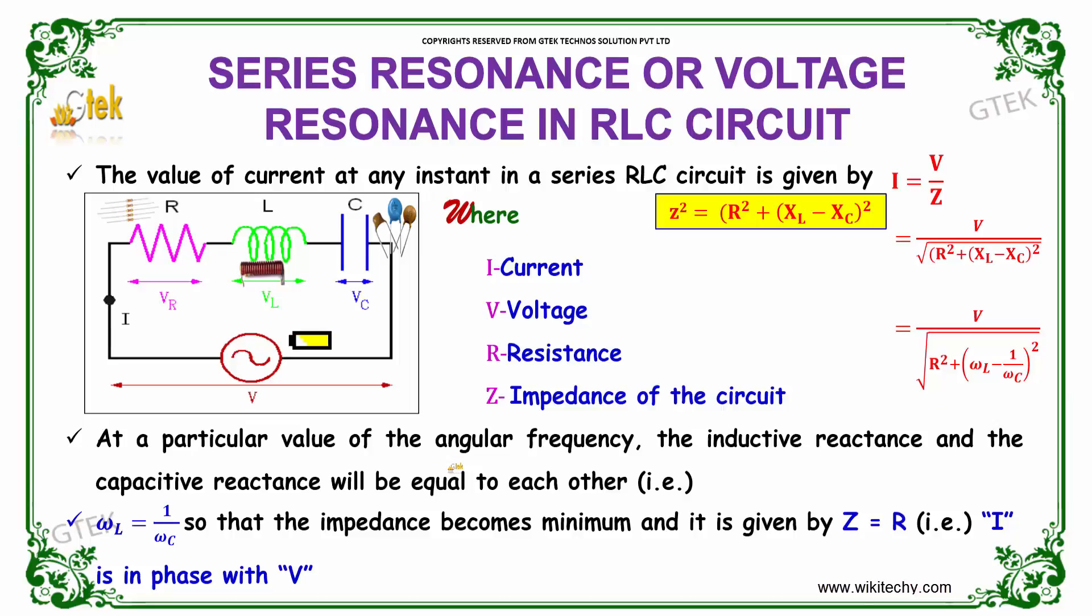At a particular value of the angular frequency, the inductive reactance and capacitive reactance are equal. Omega L equals 1 by omega C, so the impedance becomes minimum and is given by Z equals R, which indicates I is in phase with voltage.